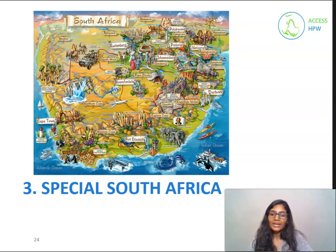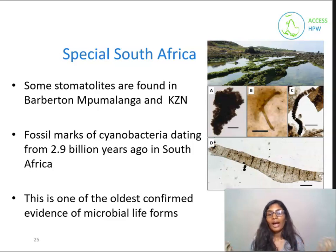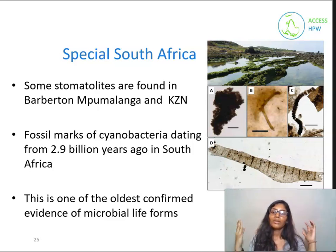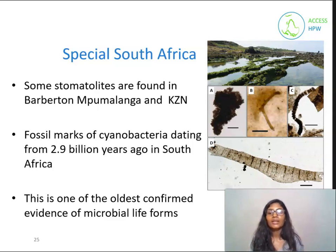We will now look at why South Africa is special in the history of the origins of life. I had heard of stromatolites being the first evidence of life for many years and only knew that they occurred in Australia as fossils. I was surprised to find out that we have living stromatolites in South Africa, which can be found in Port Elizabeth. There are only 12 places on the entire globe that have living stromatolites — this makes South Africa extremely special. Another reason South Africa is special is because we found fossils of cyanobacteria dating back 2.9 billion years, which is one of the oldest confirmed evidence of microbial life.